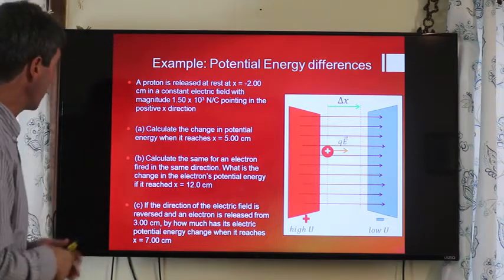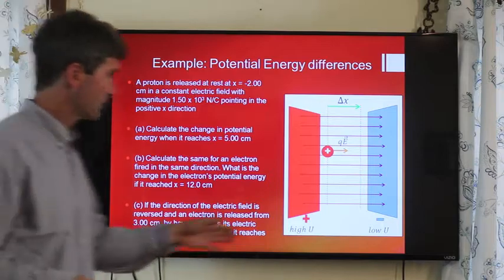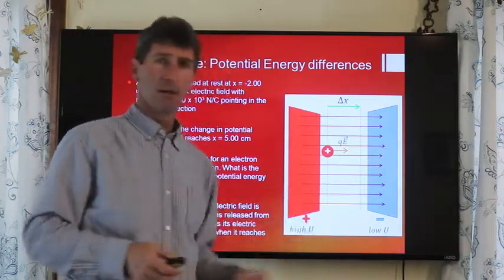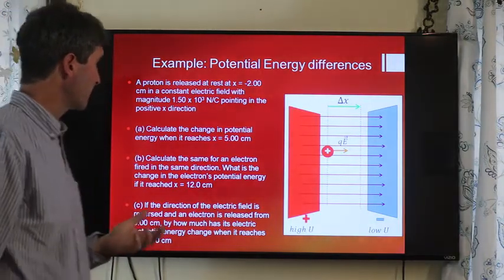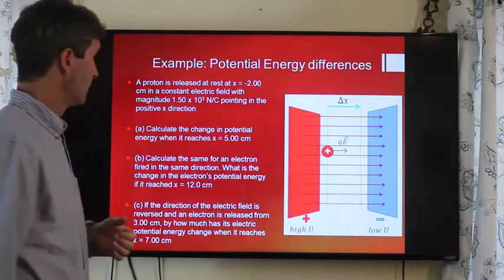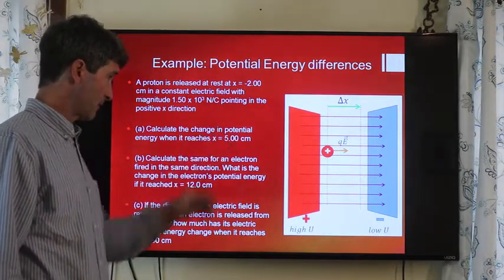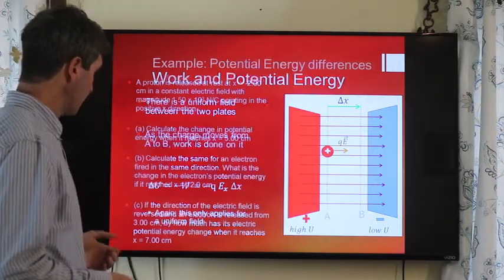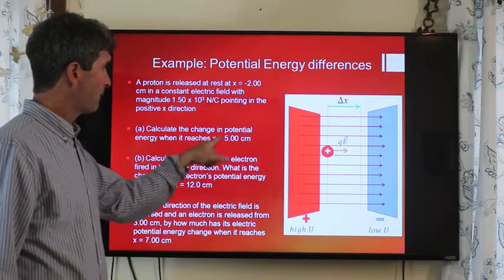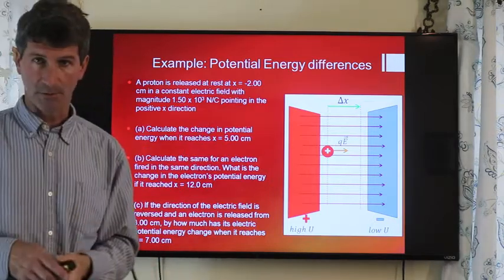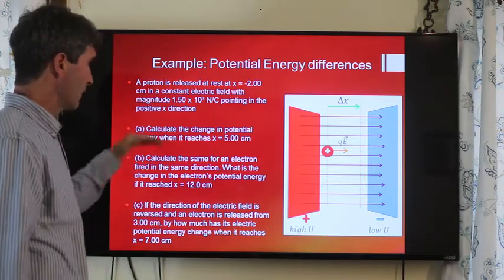Let's look at an example. We have a proton released at rest from x equals negative 2 centimeters in a constant electric field of 1.5 times 10 to the 3 newtons per coulomb pointing in the positive x direction. Calculate the change in potential energy when it reaches x equals 5 centimeters. Using delta U equals negative QE times delta x: delta x is 5 minus negative 2 centimeters, converted to meters. Q is the elementary charge of a proton. The electric field strength is given. Very straightforward to calculate.